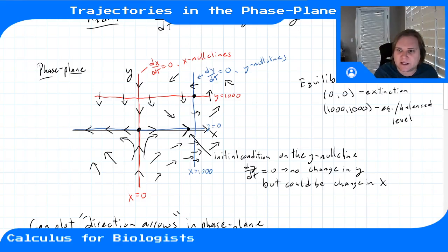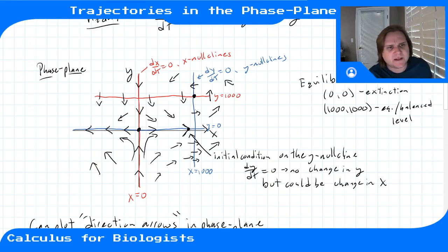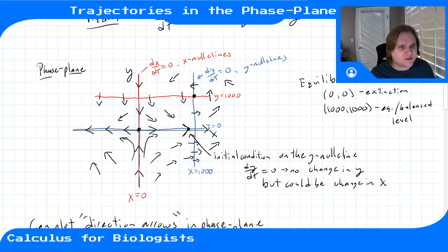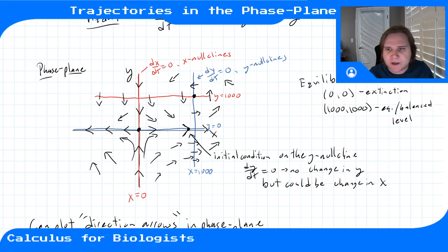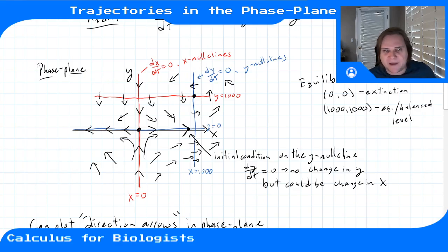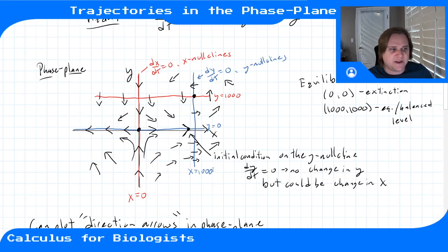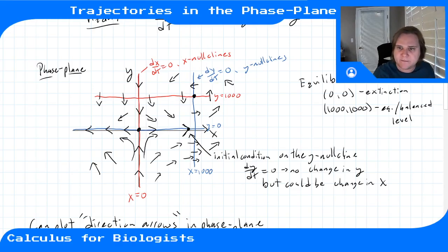You can see that arrows are almost circling the equilibrium at (1000, 1000), while we're moving away from the equilibrium at (0, 0). The (0, 0) equilibrium is clearly unstable. For (1000, 1000), the stability is not easy to infer from these arrows alone — we can't tell whether solutions approach it, move away, or circle it indefinitely.